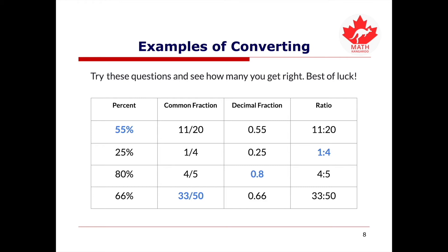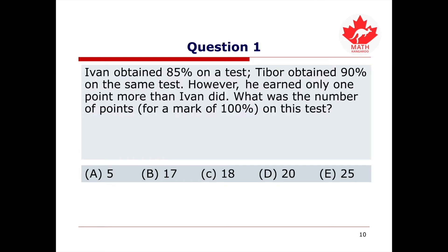Did you get those correct? Now, let's try some problems related to percentage. We will now look at question one. Ivan obtained 85% on a test. Tibor obtained 90% on the same test. However, he earned only one point more than Ivan did. What was the number of points for a mark of 100% on this test? Be sure to pause the video to try this question on your own.